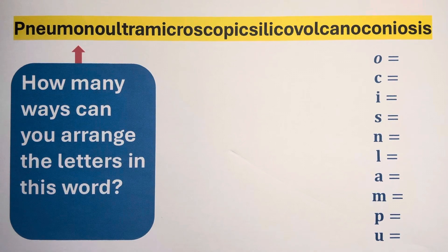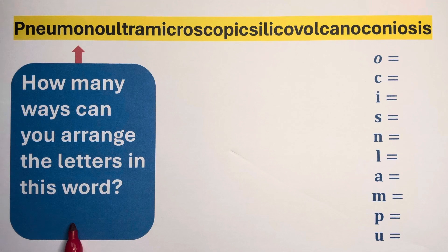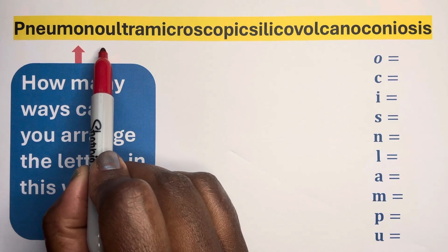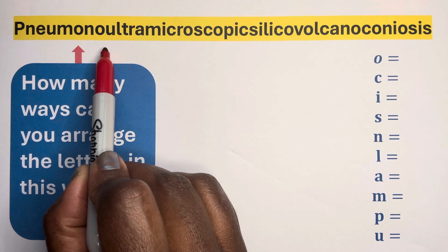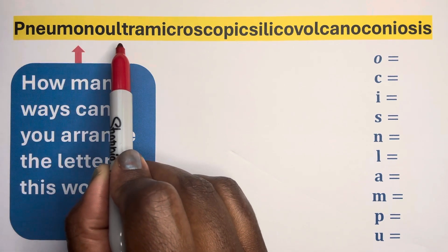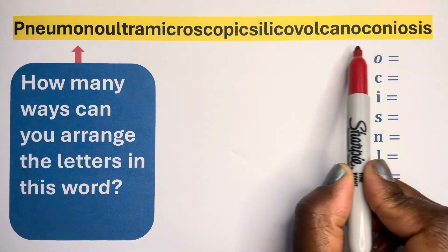Hi, today we're going to find out how many ways you can arrange the letters in this word. This word is from an English dictionary. It's called Pneumonoultramicroscopicsilicovolcanoconiosis.